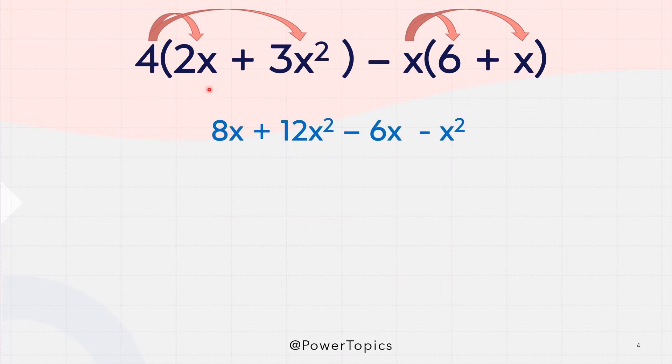So 4 multiplied by 2x, we get 8x. And we plus it. 4 multiplied by 3x square, we get 12x square. x multiplied by 6, 6x. Now take note that this is a negative number multiplied by a positive number. So the outcome is going to be negative.